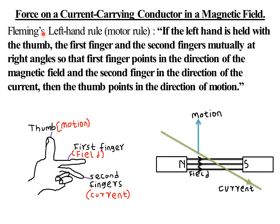Whenever you are dealing with electric motors, use Fleming's left-hand rule to predict the direction of motion. But whenever you are using an electric generator, remember that an electric generator does the reverse of an electric motor — it converts mechanical energy into electrical energy.